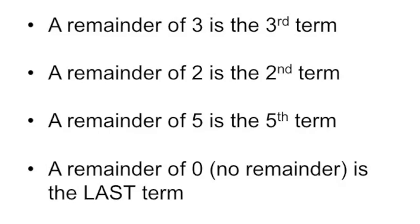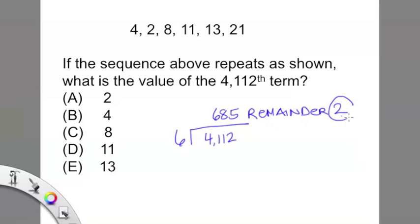Step number four: solve the problem. As a general rule of thumb for sequence problems, refer to the following: a remainder of 3 translates to the third term, 2 is the second term, 5 is the fifth, and a remainder of 0 is the last term. So for this problem, the remainder of 2 translates into the second term, which conveniently is also 2, leaving us with choice A.